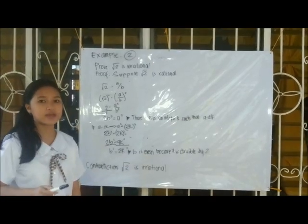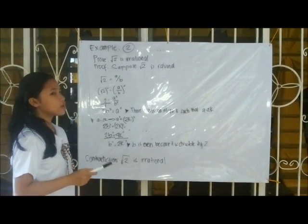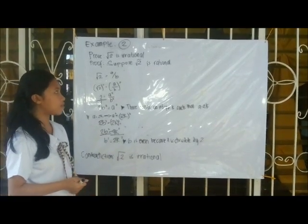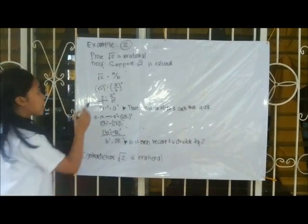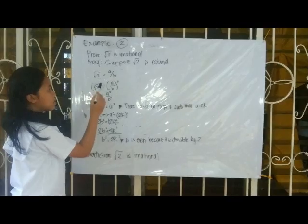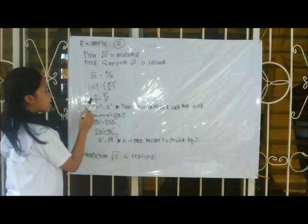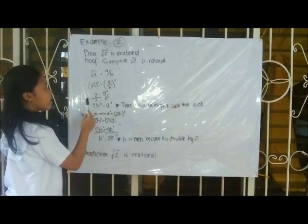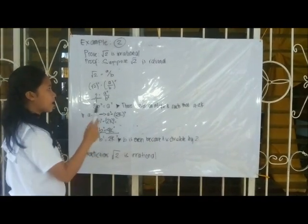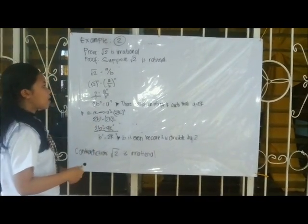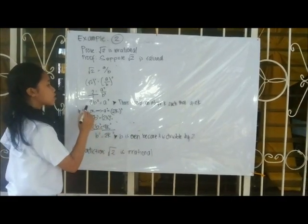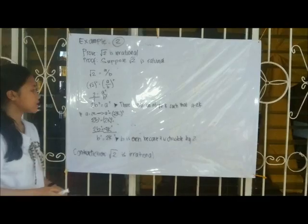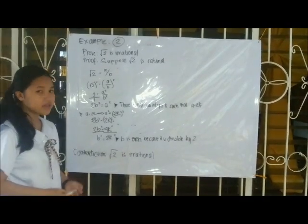We assume that a over b is reduced to lowest terms so that a and b have no common factors. To get rid of the radical sign, we square both sides. So (√2)² equals 2, and (a/b)² equals a² over b². By cross multiplication, 2b² equals a². Since 2 divides a², 2 is a divisor of a, so a is even. Therefore there exists an integer k such that a equals 2k.